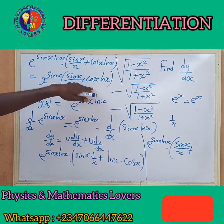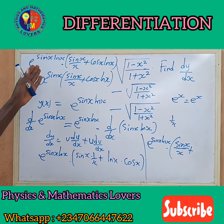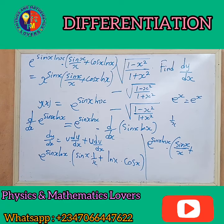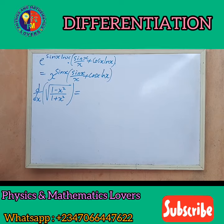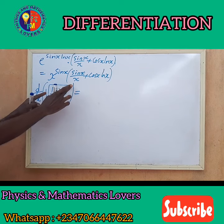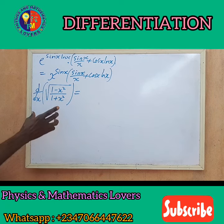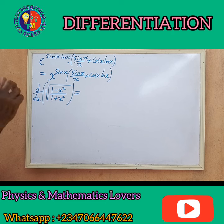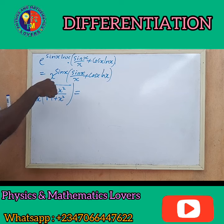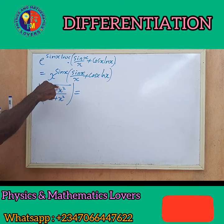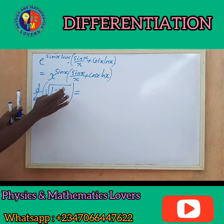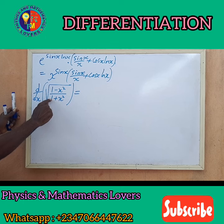Let us move to the second term of the question. The second part of the expression: we have to differentiate the square root of (1 minus x squared) all over (1 plus x squared). Inside here we also have two functions — the square root is the outer function, and the quotient is inside. So there is a quotient inside a square root, meaning we differentiate with a composite function. If we let u equal to (1 minus x squared) all over (1 plus x squared), we get a composite function.